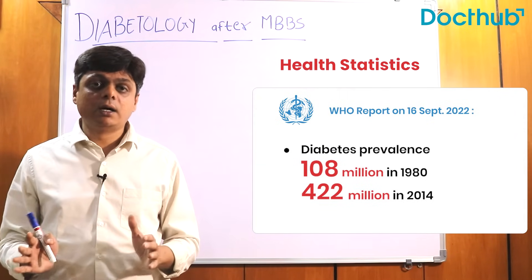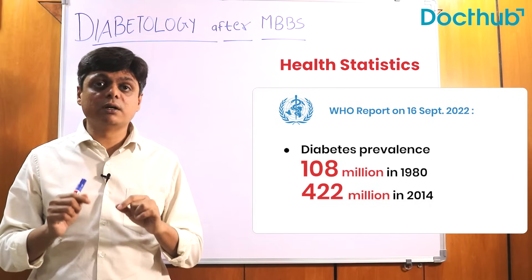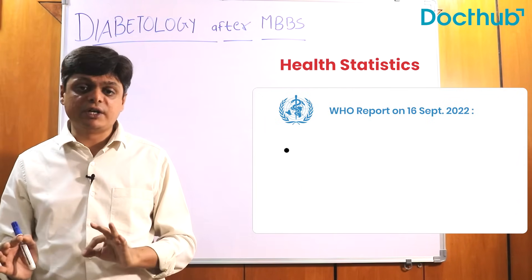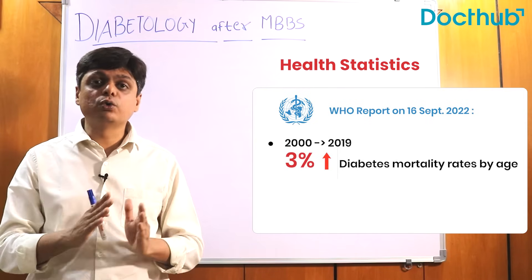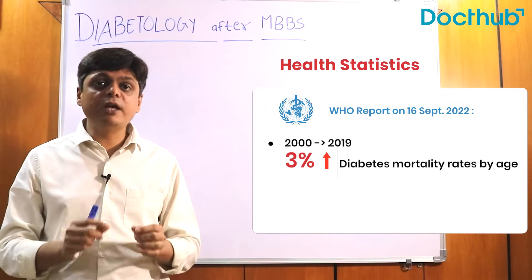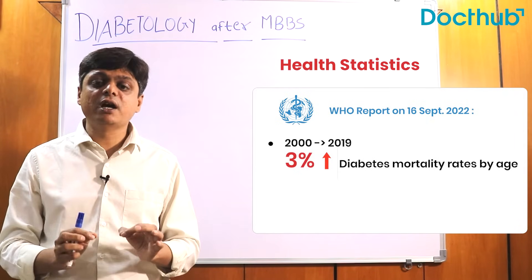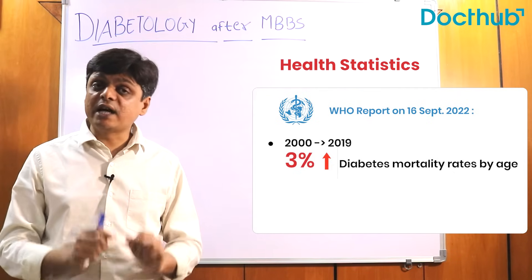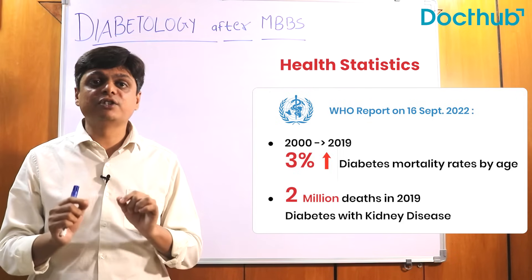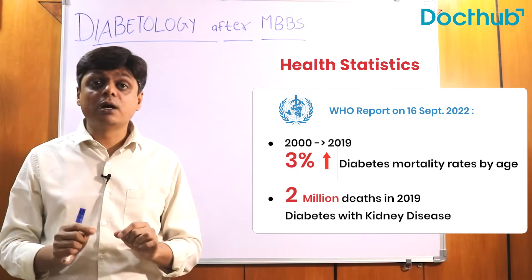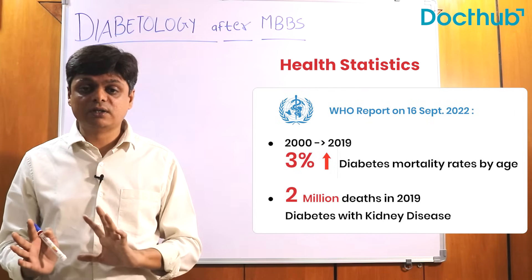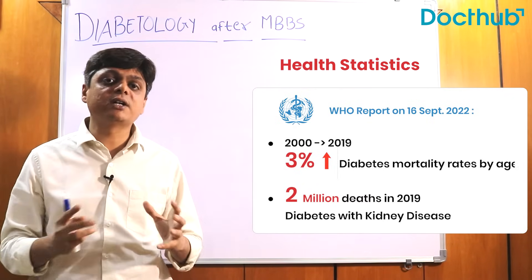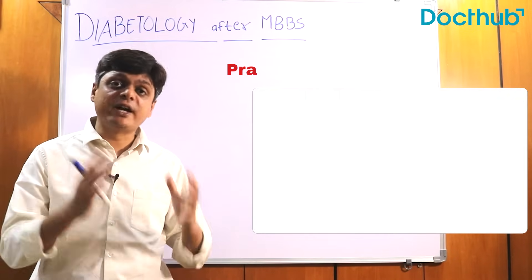diabetes prevalence increased from 108 million in 1980 to 422 million cases in 2014. It's a global prevalence and an increasing trend has been identified in low and middle income countries. Between 2000 to 2019, there was a 3% increase in mortality with diabetes cases, and in 2019, 2 million deaths were reported in cases with diabetes with kidney diseases.